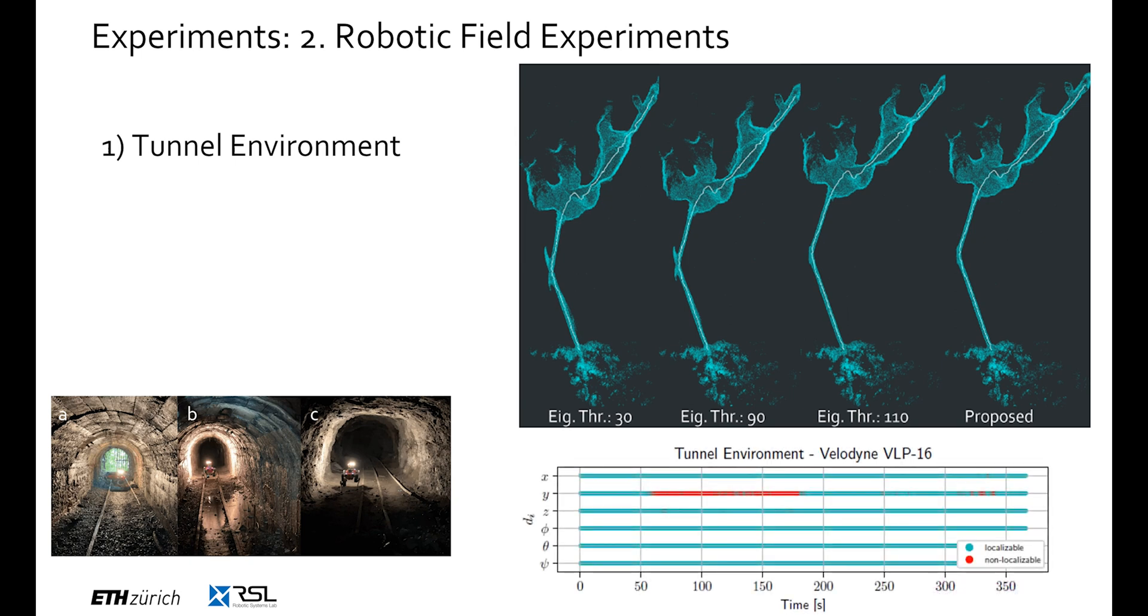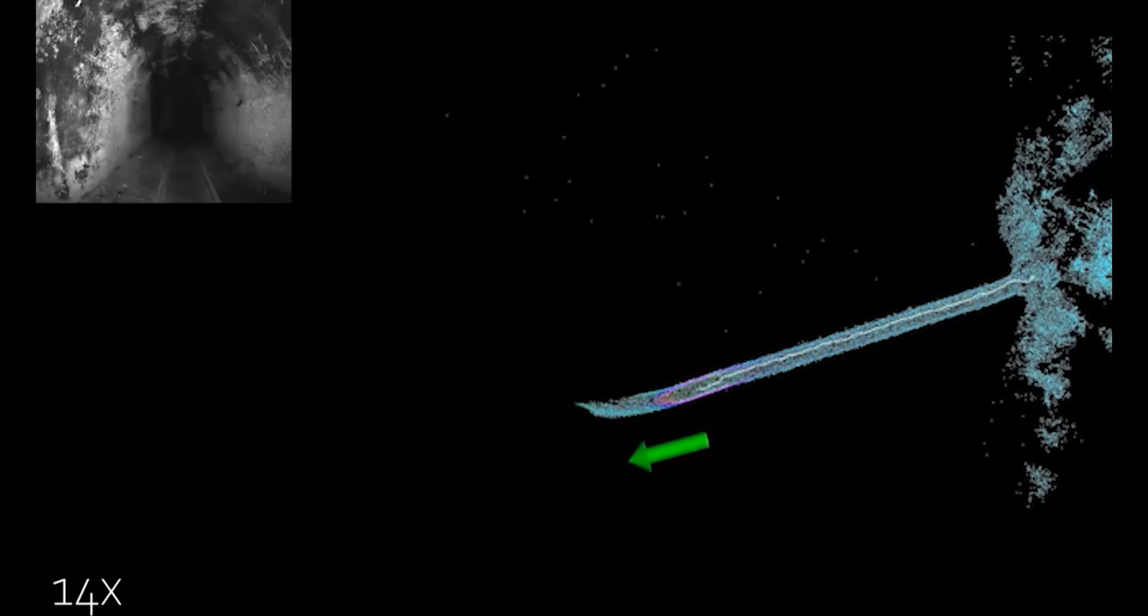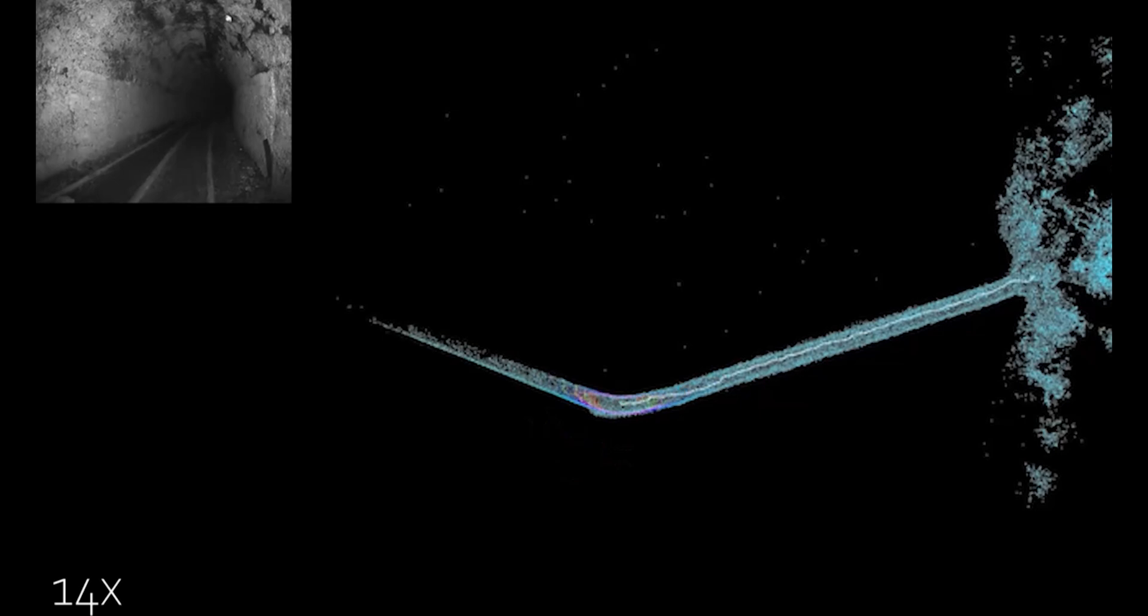The estimate of our network can be seen in the graph in the bottom right, where only the y-direction, the direction aligned with the tunnel, is classified as non-localizable. The resulting video shows the behavior during the dataset. Here the green arrow indicates the direction of the missing localizability.